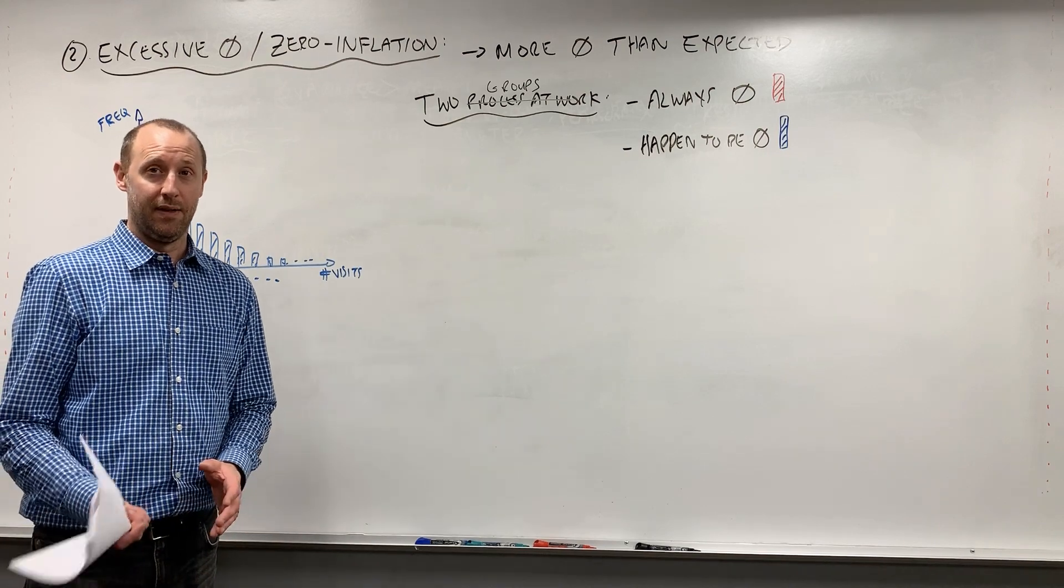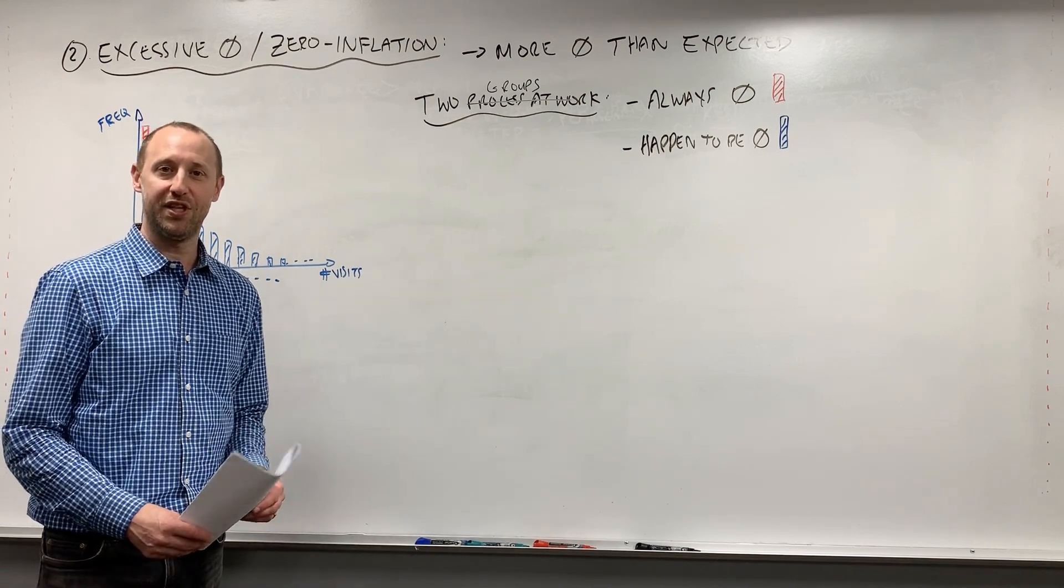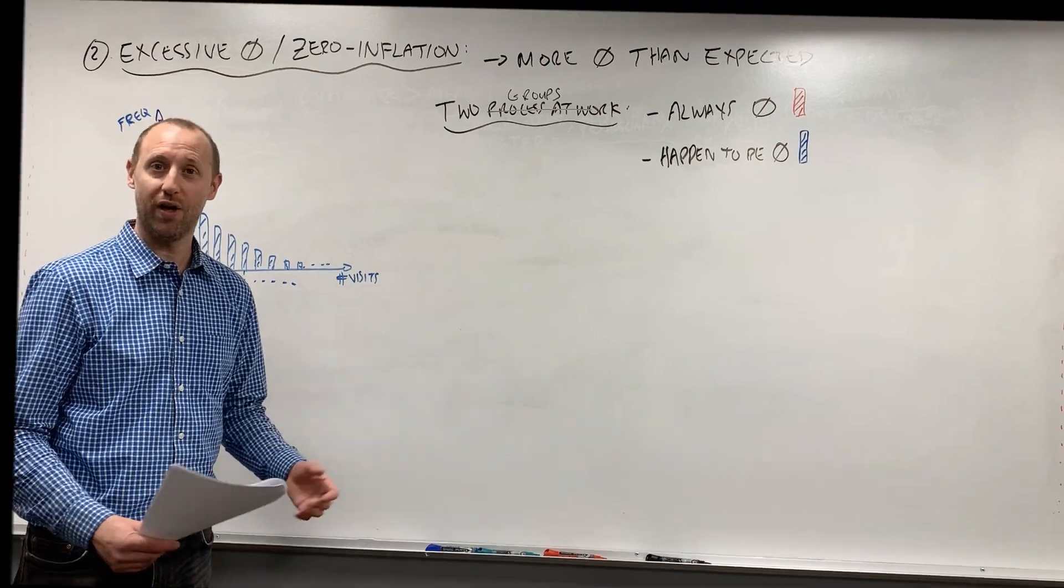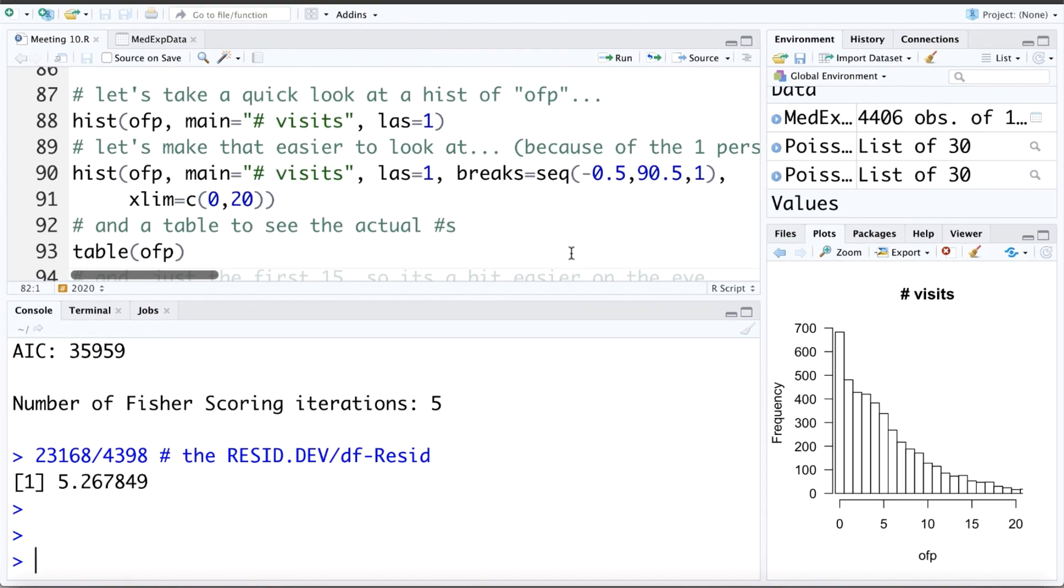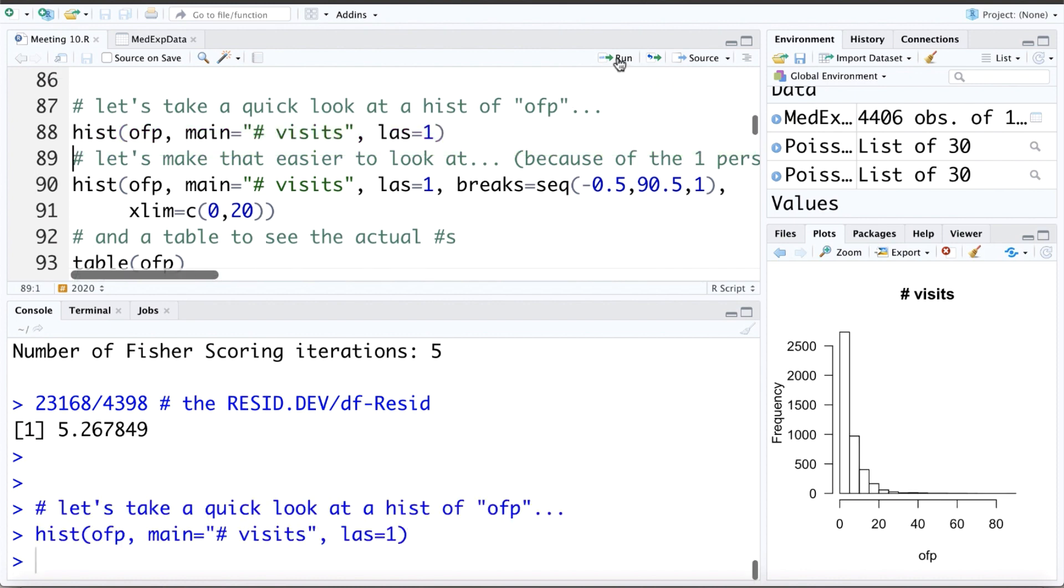We can take a look at the medical expenditures data, the number of visits to a physician in a year, to see if we have zero inflation going on there. We've talked a little bit about the idea of excessive zeros or zero inflation. And let's take a look in our data and see if this is the case. To get an idea, we can look at a histogram of the number of visits to a physician in the past year. Now it's quite difficult to look at this and see what's going on, because the number of visits really tails out to the right, really skewed distribution. So what I'm going to do is make that histogram again, but asking R to make the x-axis go only from zero up to 20. So we can zoom in a little bit more and see what's happening.